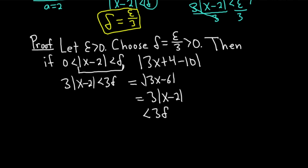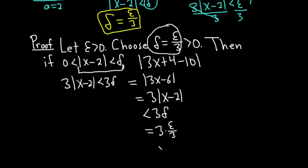Now we just make a substitution. Delta is equal to epsilon over three, so this is equal to 3 times epsilon over three. The threes cancel, and so we get epsilon. And so we've satisfied the definition.